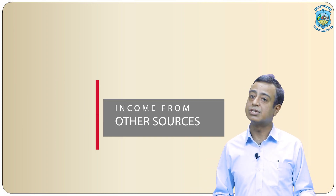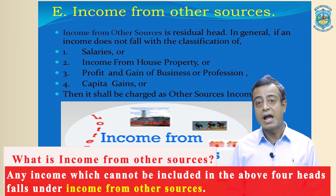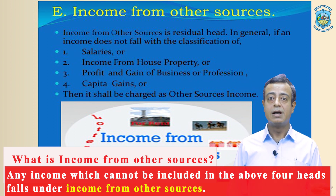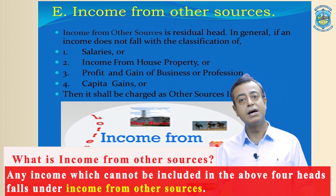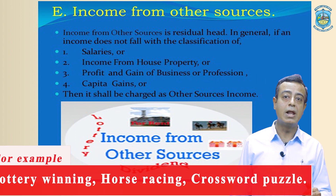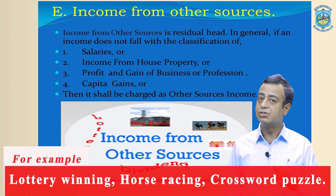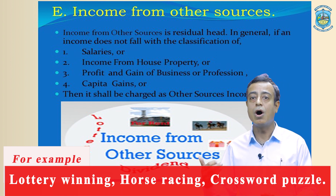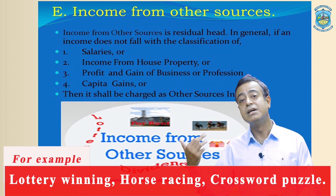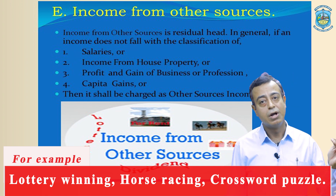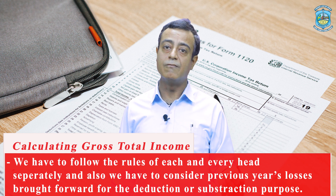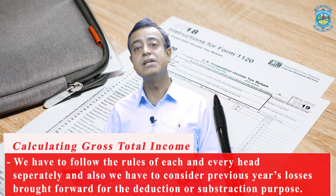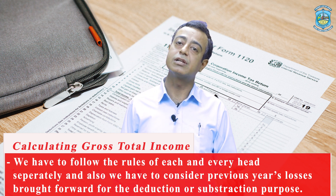Fifth and the last one is income from other sources. Any income we cannot include in the above four heads is included in income from other sources. So 'other' means other than salary, other than house property, other than business and profession, other than capital gain. For example, lottery winning is not income from salary, not from house property, not from capital gain, and not from business and profession. So we will include lottery winning, horse racing, crossword puzzles, interest and dividend, and such kind of incomes in the head of income from other sources. For the calculation of gross total income, we have to follow the rules of calculation of each and every head separately and also consider previous year's losses brought forward for deduction purposes.